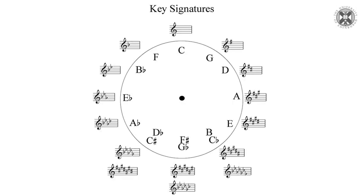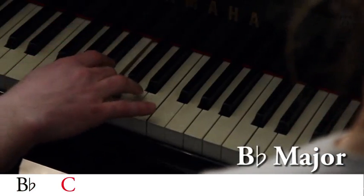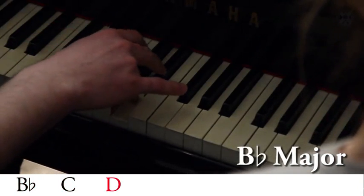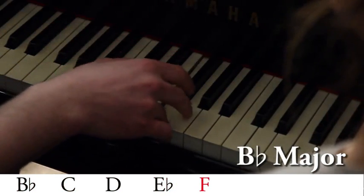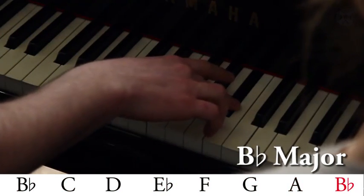Starting from F, let's travel another fourth around the circle anti-clockwise: F, G, A, B flat. Taking B flat as the tonic and applying our major scale pattern, we get B flat, C, D, then a semitone takes us to E flat, F, G, A, and back to B flat. So we've found that we've got a B flat and an E flat — we've added an extra flat for each extra step around the circle, just as we did with sharps. Therefore B flat major has B flat and E flat.